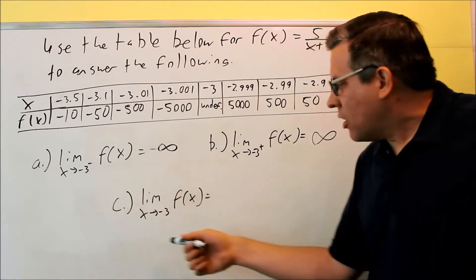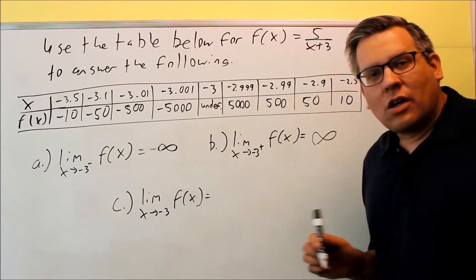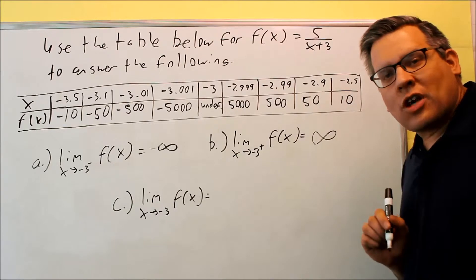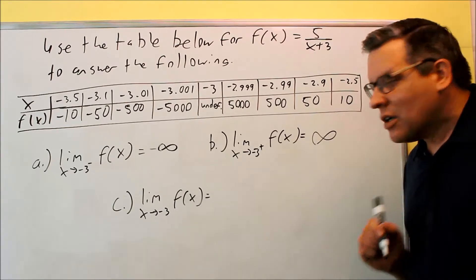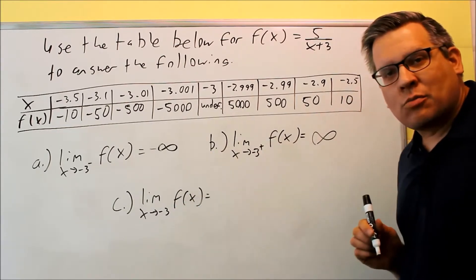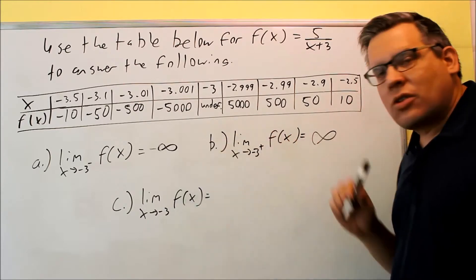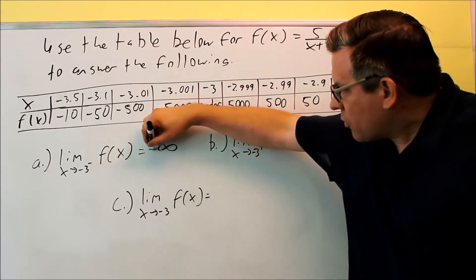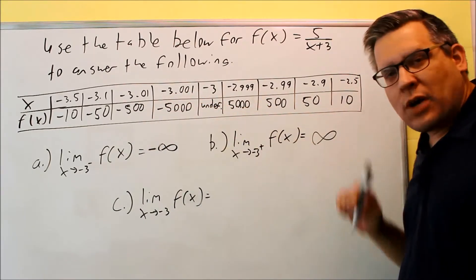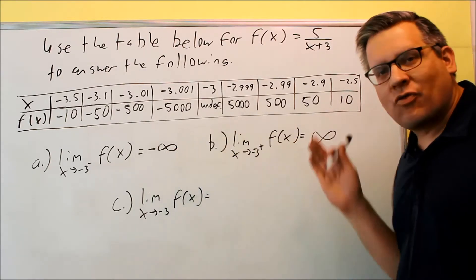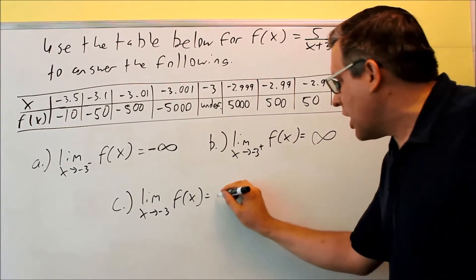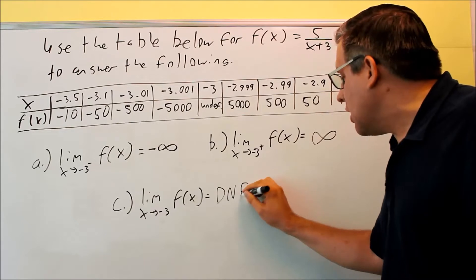Now let's take a look at the limit as you approach negative 3. We talked about this before in a previous section, that in order for a limit to exist, the left and right-hand side limits must approach the same number. Well, this one approaches negative infinity, this one approaches positive infinity. They're approaching two different values, so because of this, we have to put DNE here.